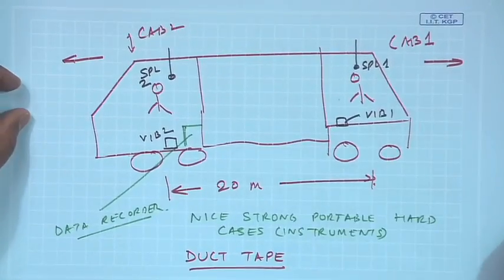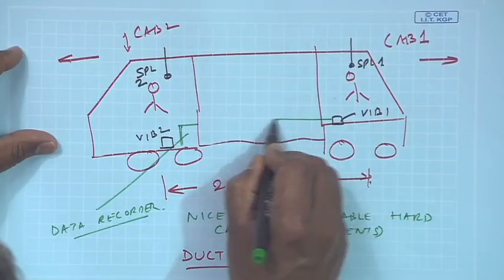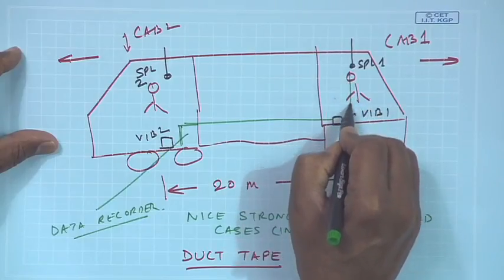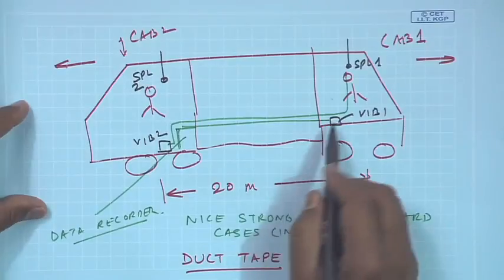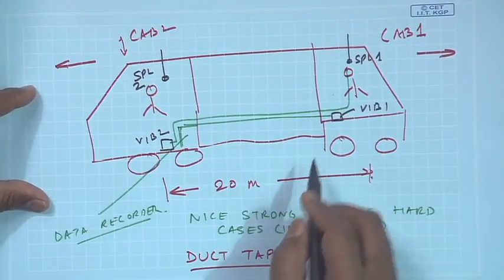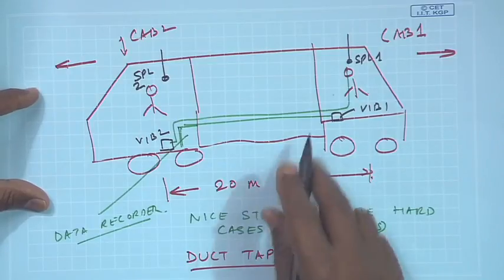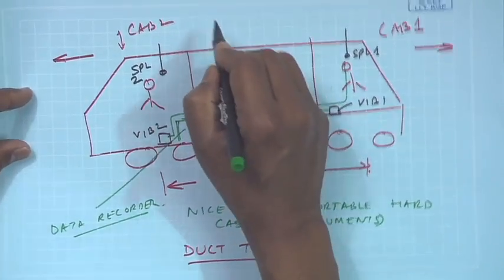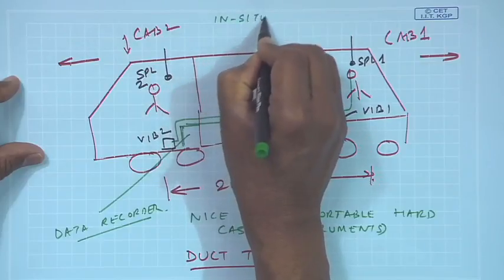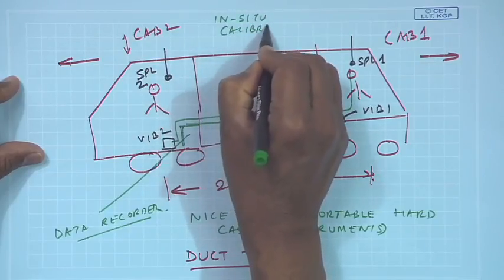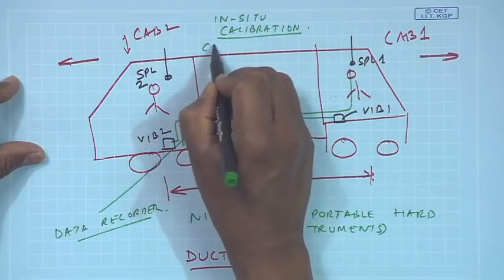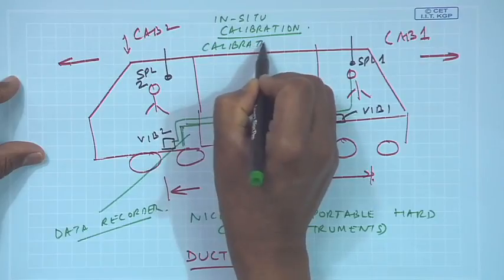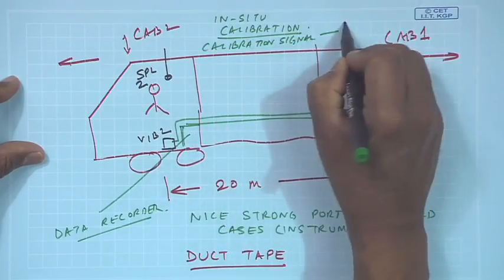The locomotive is about 20 meters long, so I need to lay the cables all along the locomotive frame to go to the recorder. We need to have long cables. When we have long cables we do not know what the voltage drop is. So we also need to do what is known as in-situ calibration of the signal, and it is good to store a calibration signal in the tape recorder.